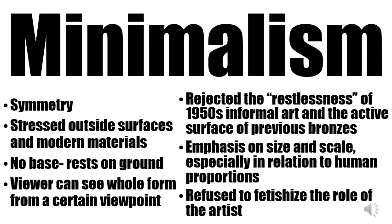In 1966, with the exhibitions Primary Structures and Systematic Painting, minimalism began. Minimalism was an art movement preoccupied with symmetry and modern materials that stressed the outside surface of an object. Most often, they eliminated the base so that the sculpture rested directly on the ground. From at least one point of view, the viewer could see the whole form of the object at once. They rejected the restlessness of 1950s informal art and the active surface of previous bronzes. They placed an emphasis on size and scale, especially in relation to the human body. Lastly, they refused to fetishize the role of the artist, drawing from constructivist terminology.